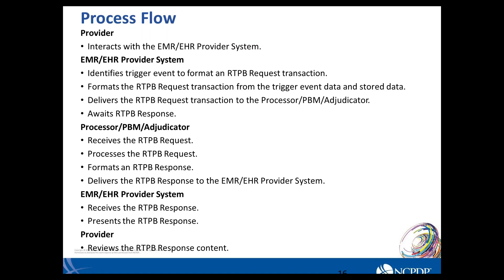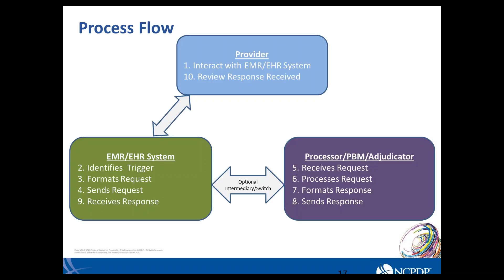The process flow goes from the provider beginning to interact with their system to generate a request, to what the EHR system does, what the PBM system does, and then coming back to the provider. The provider interacts with their system, which identifies the trigger to format and send the request. The processor then receives the request, processes it, formats the response, and sends it back to the EMR system, which receives it and presents it to the provider for review.